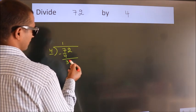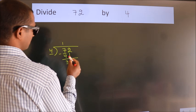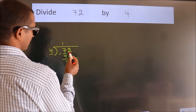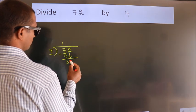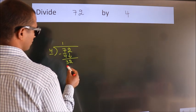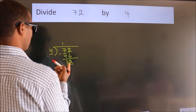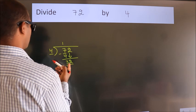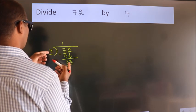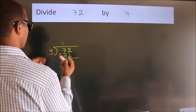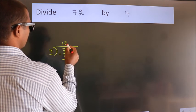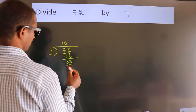After this, bring down the beside number. So 2 down, so 32. When do we get 32 in the 4 table? 4 eights, 32.